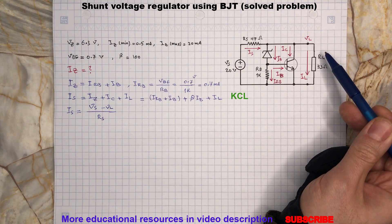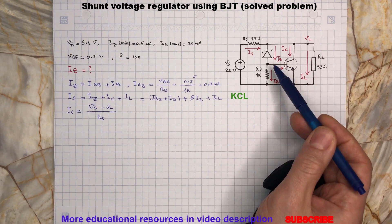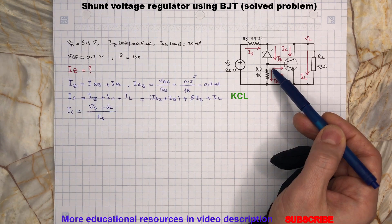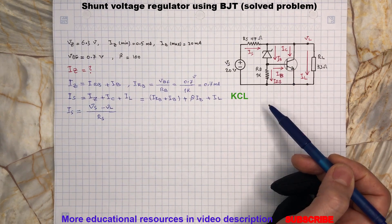Here we assume the Zener diode is on, so voltage across the load can be defined as voltage across the Zener diode plus voltage at base emitter of the transistor. So we can write...